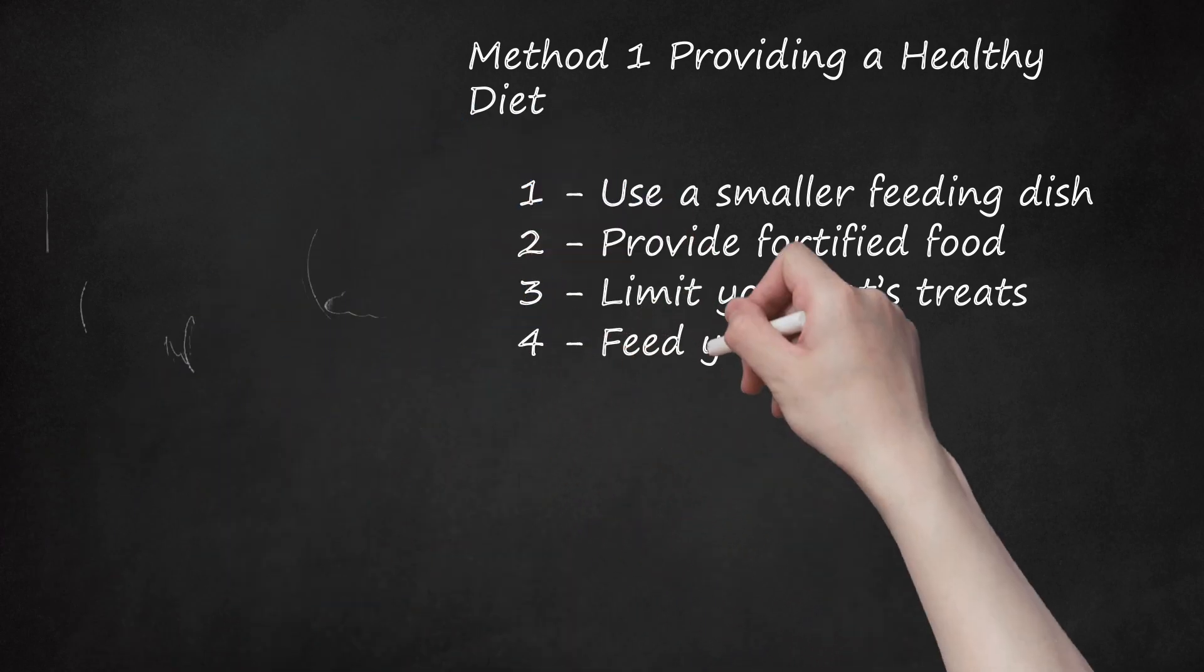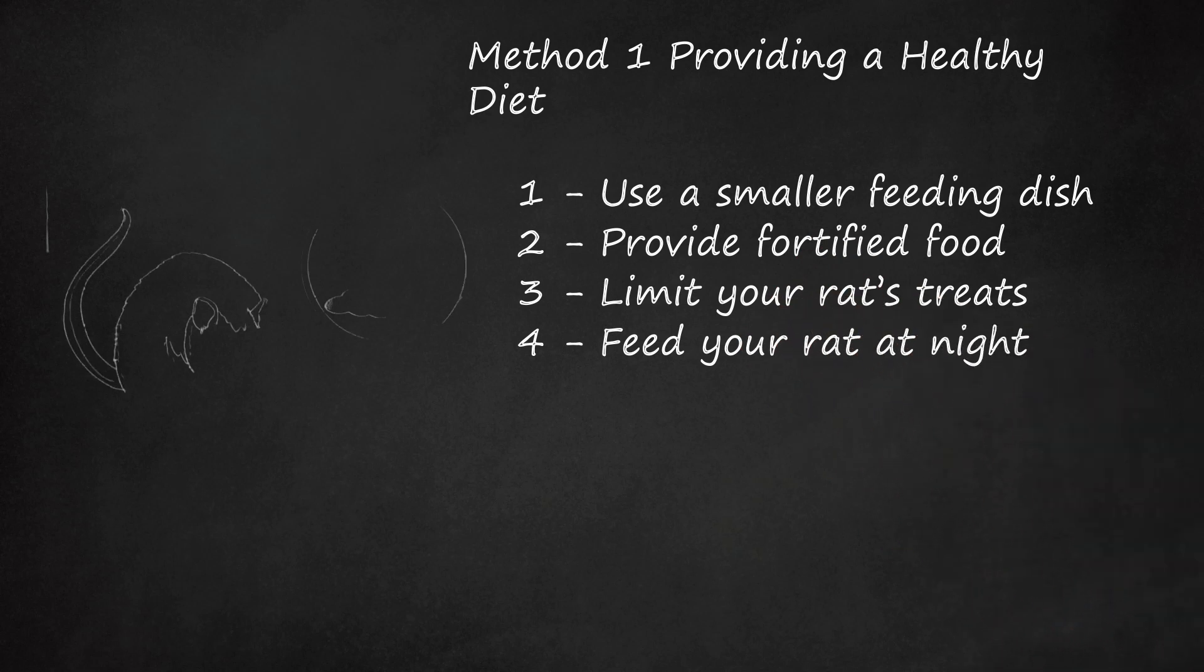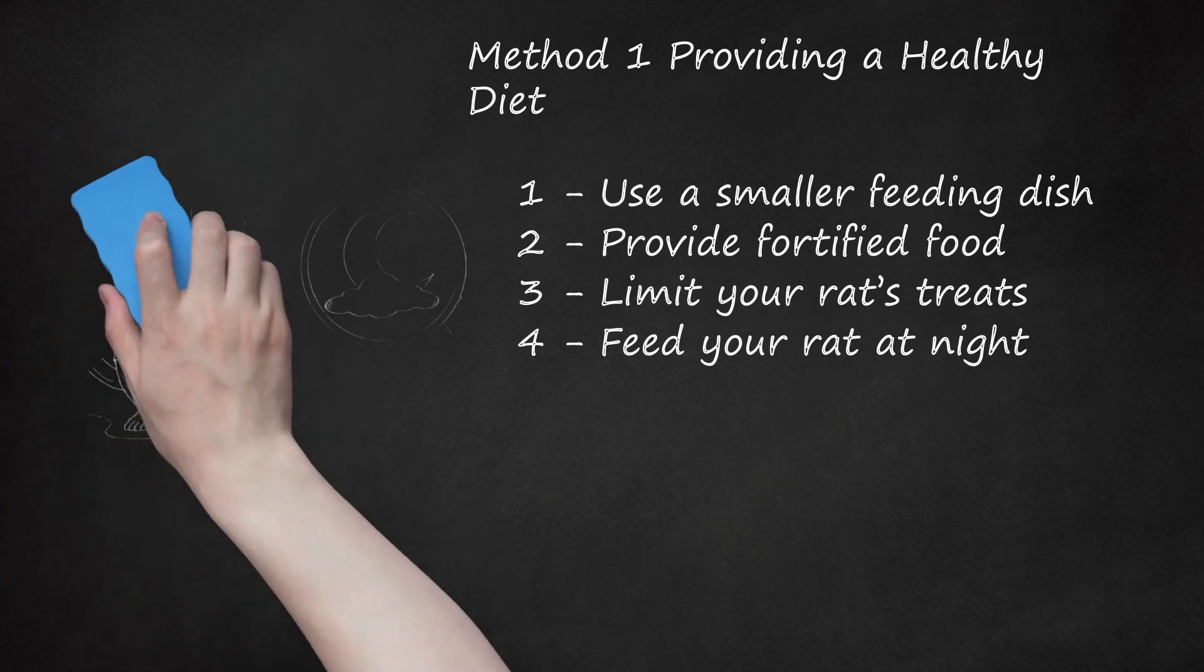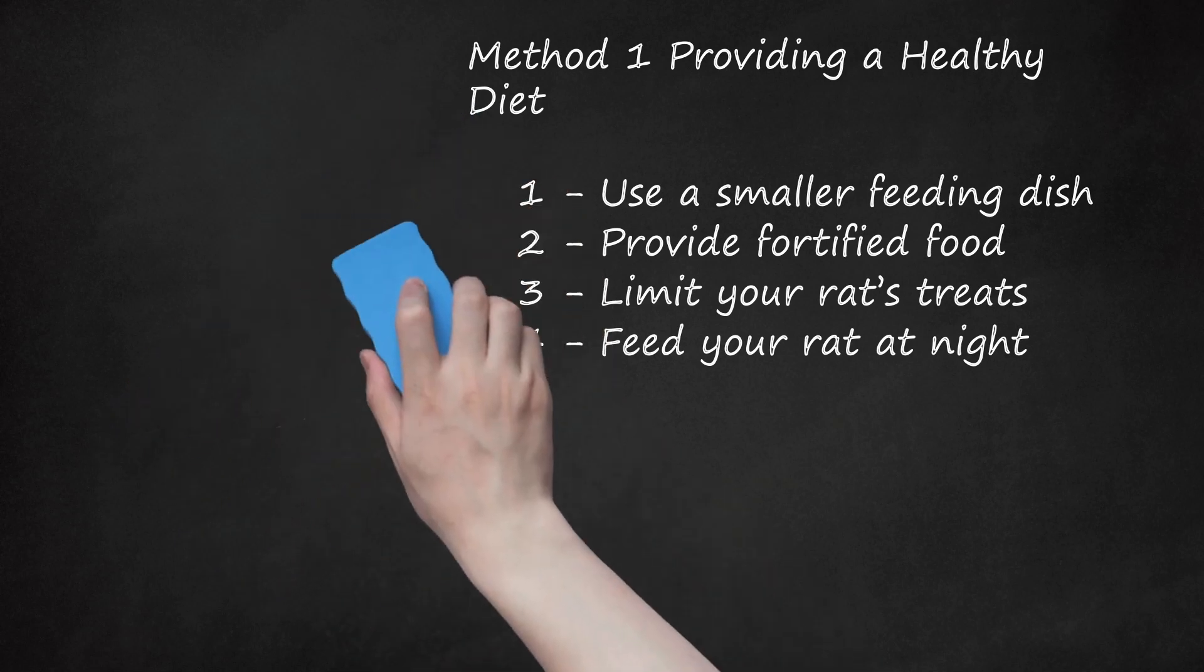Fourth, feed your rat at night. Rats are nocturnal creatures by nature, which means they'll tend to be most active during the nighttime hours. It's good to feed them early in the evening when they're most likely to be alert and awake. If you notice small stashes of food around its cage, it's likely you're overfeeding it and should cut back on the amount of food you're providing. Don't skip your rat's meals, or your rat may become hungry, anxious, and unhappy.